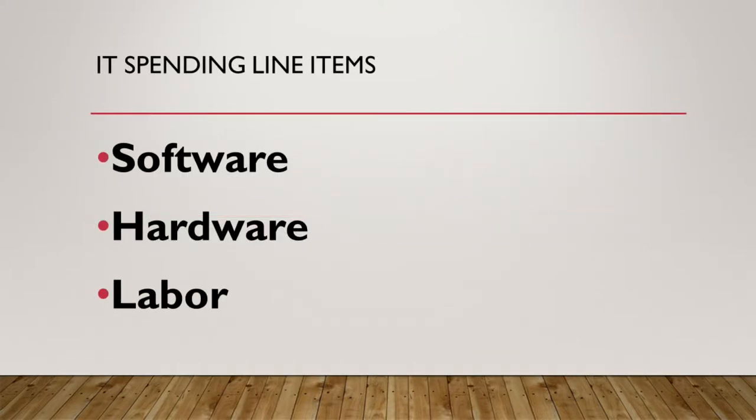The primary three categories for your spending line items are software, hardware, and labor. Software is going to include your ERP, electronic health record system, accounting, office suite, antivirus, marketing automation, scheduling, conferencing, and many more things — anything that utilizes software to function.